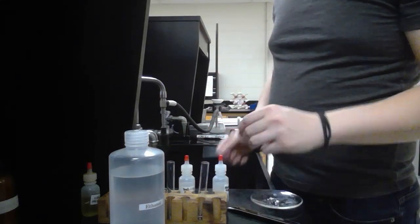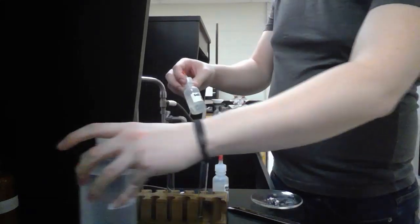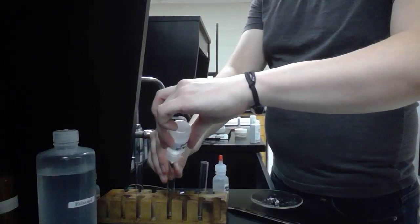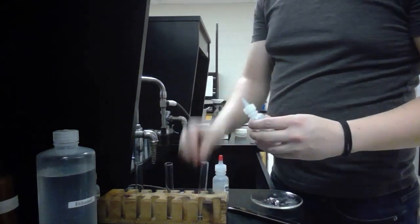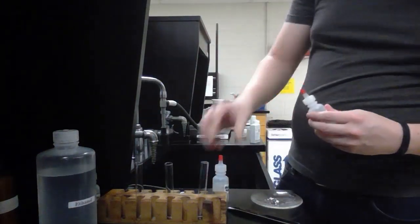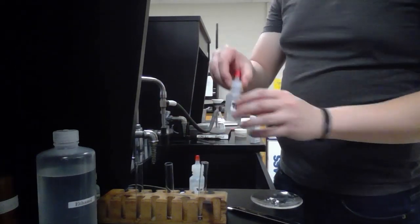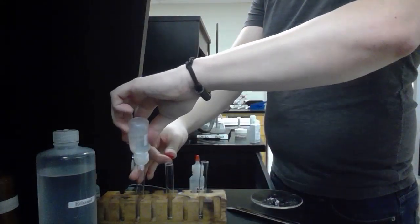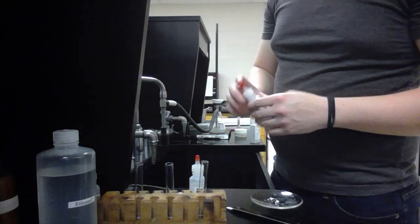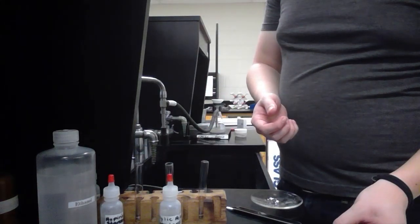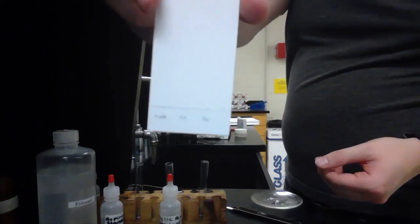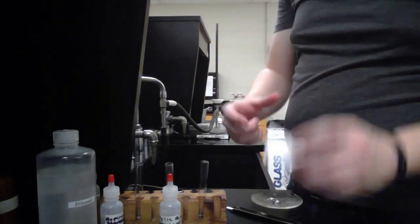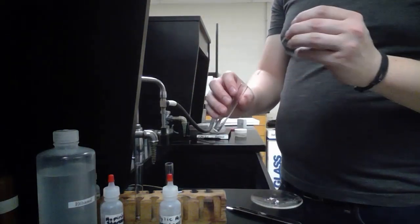Now we're going to add the standards to test tubes. This is the salicylic acid standard and this is the aspirin standard. This is our prepared TLC plate, so I have labeled there made aspirin, salicylic acid standard, and aspirin standard. We're going to spot each substance on the crosshairs.